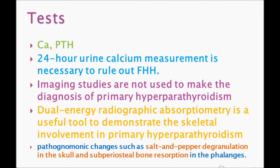Dual-energy X-ray absorptiometry (DEXA) is a useful tool to demonstrate skeletal involvement in primary hyperparathyroidism. If they ask which is the best test for skeletal involvement, the answer is DEXA. Pathognomonic changes include salt-and-pepper granulation in the skull and subperiosteal bone resorption in the phalanges — this is a pathognomonic sign important for Step 1 and Step 2.